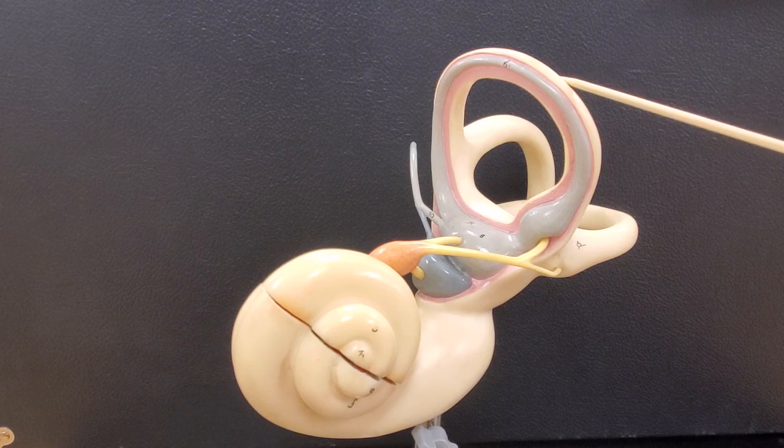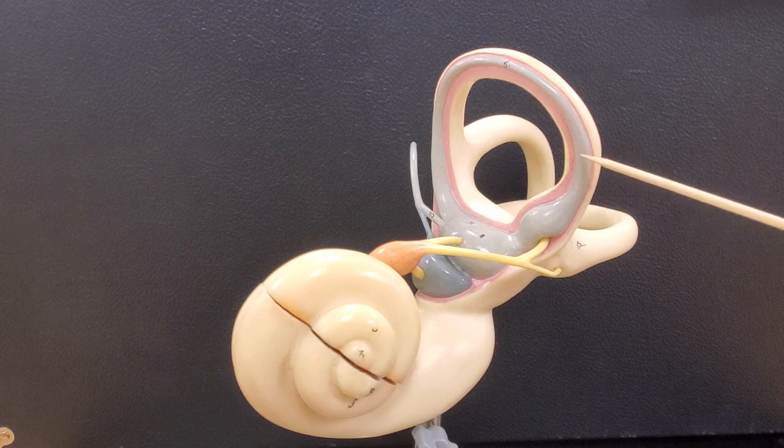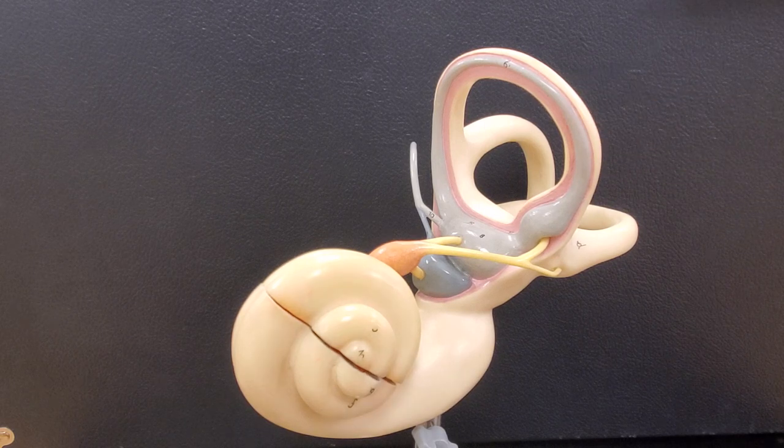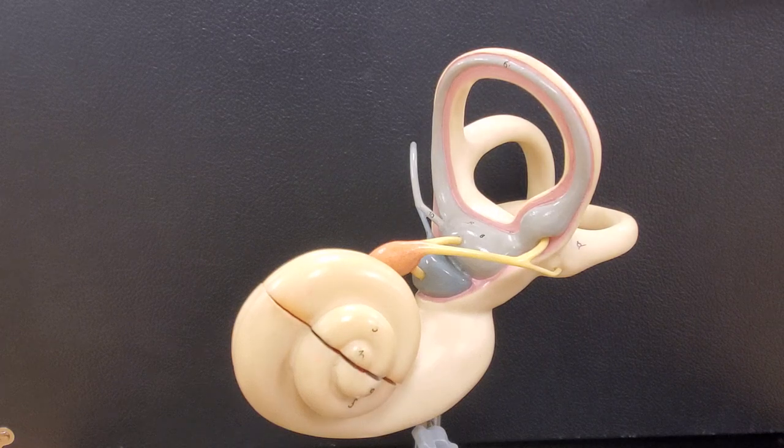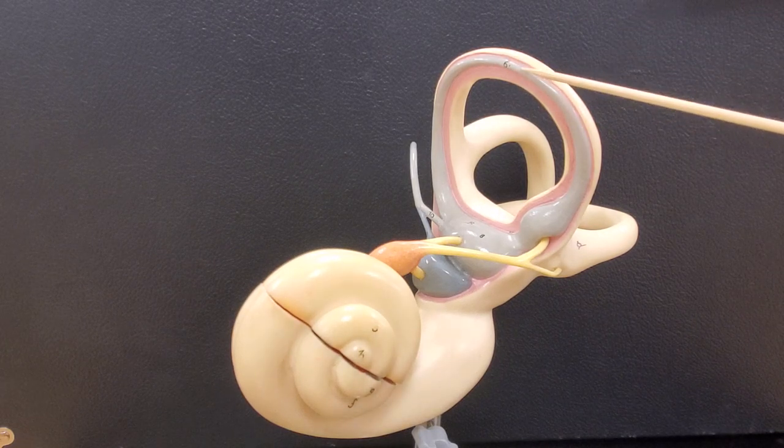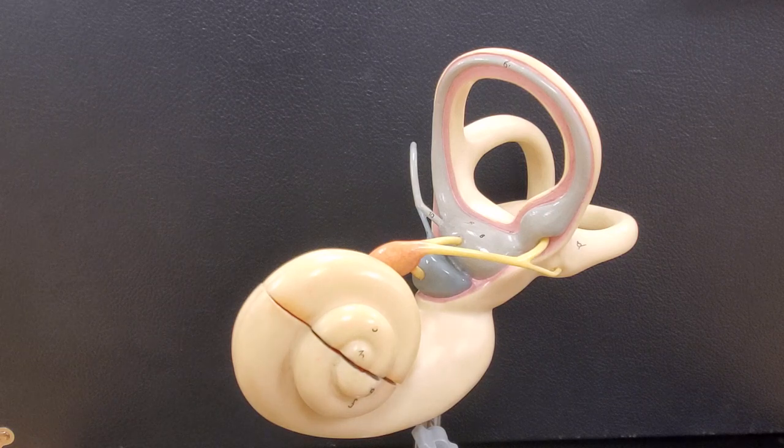So, bony labyrinth, the outer white covering. The blue lining or the blue structure is called the membranous labyrinth. And this pink fluid would be called perilymph. If I could cut the membranous labyrinth open, there would be a fluid inside of it called endolymph.